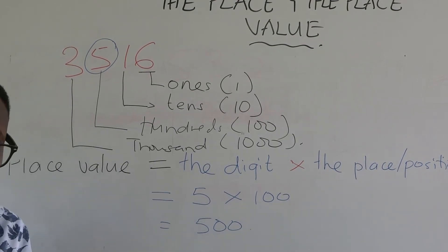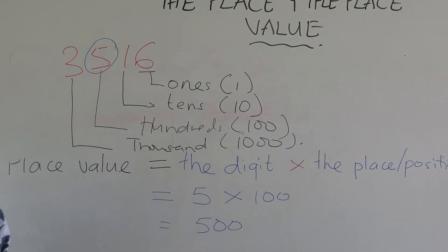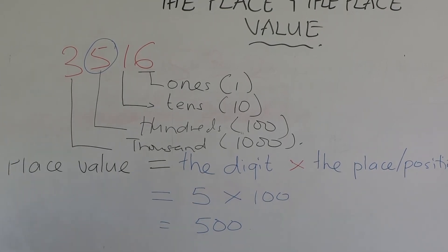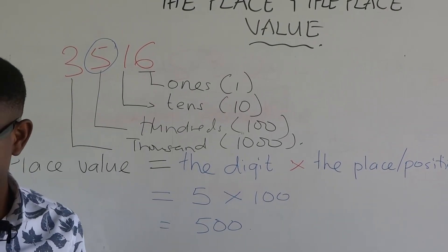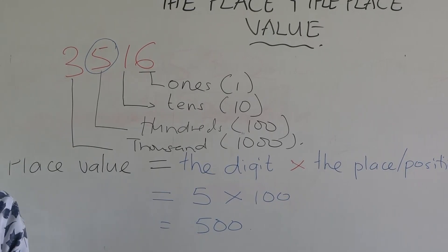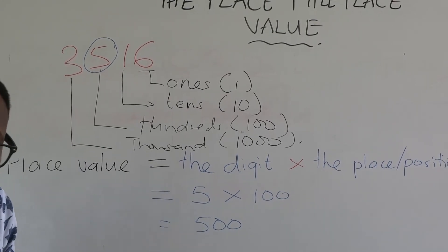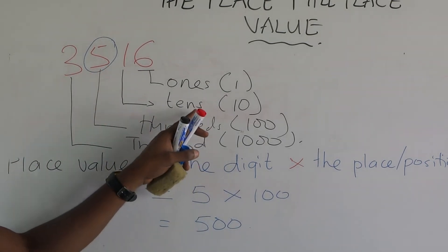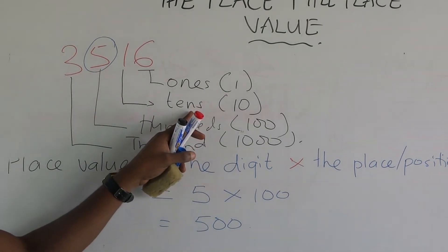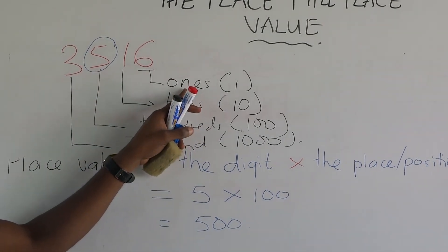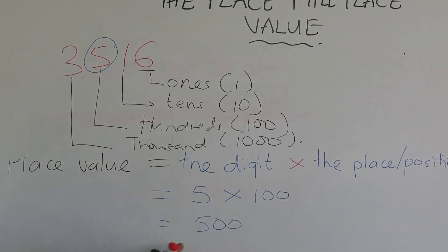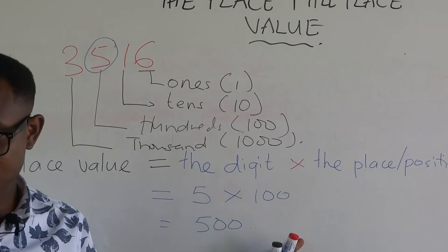You can be asked to identify the place and the place value of the following digits, and you should be able to differentiate between them. The place only refers to the position. For the place value, you must multiply the digit by the place.